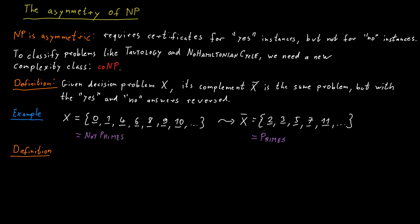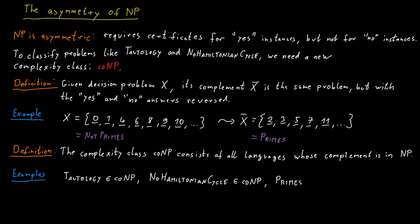The complexity class co-NP is defined as the set of all languages or decision problems whose complement is contained in NP. So for example, tautology or no Hamiltonian cycle or primes.